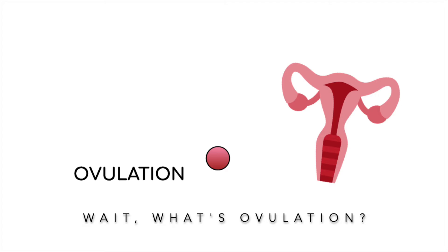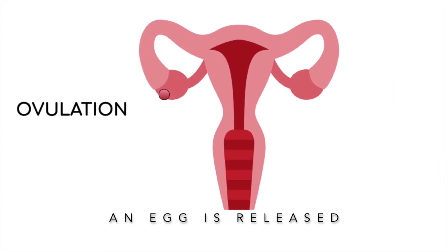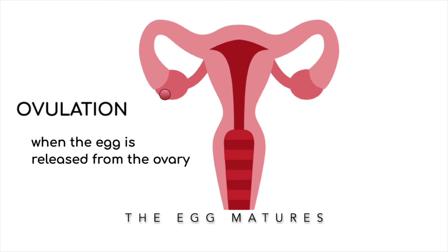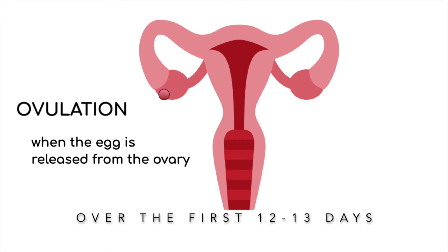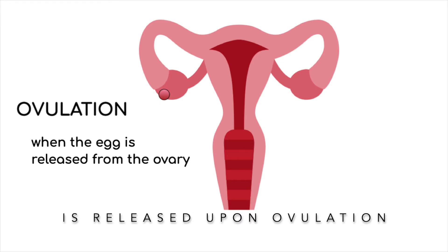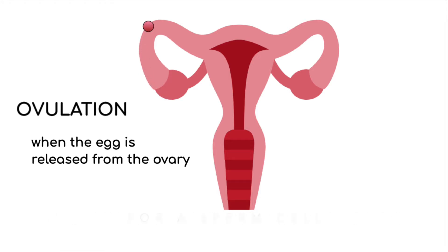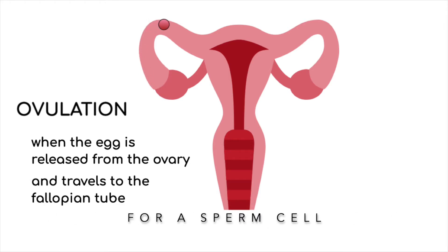What's ovulation? Ovulation occurs when an egg is released from the ovary. The egg matures over the first 12 to 13 days of the menstrual cycle, is released upon ovulation, and waits in a fallopian tube for a sperm cell.